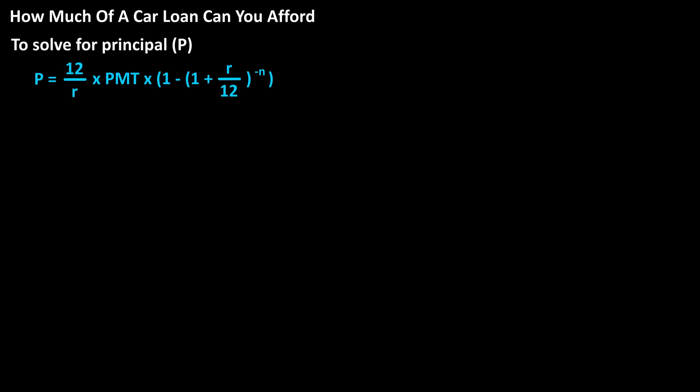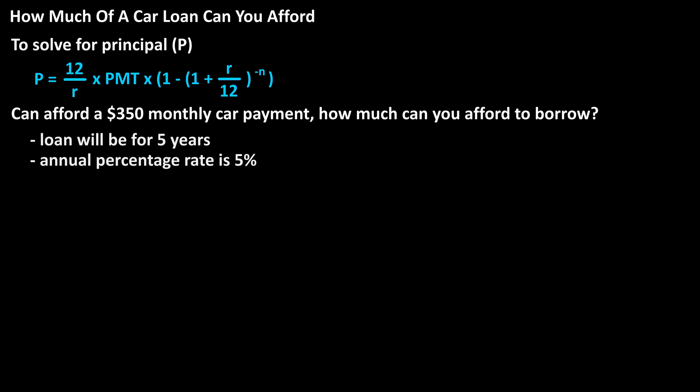As an example, let's say that you can afford a monthly car payment of $350. How much can you afford to borrow as the principal? We'll say the loan will be for 5 years at an annual percentage rate of 5%.